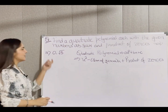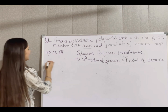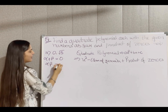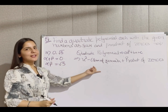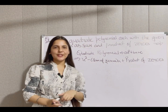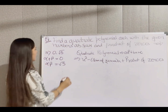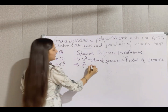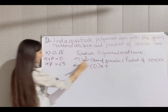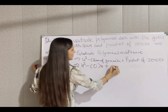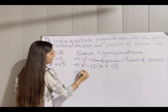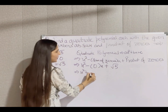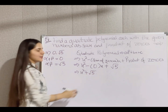Now the third part: sum of zeros is 0 and product of zeros is √5. Putting these into the formula x² - (sum)·x + (product), we get x² - 0·x + √5. We can skip the 0x term, so the required quadratic polynomial is x² + √5.